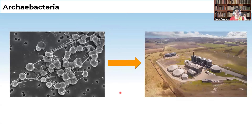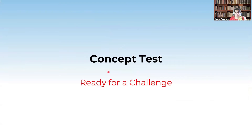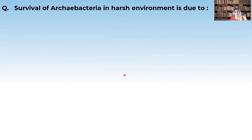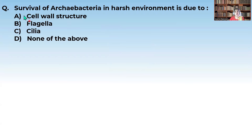Some archaebacteria act as methanogens — biogas is produced from dung because of the action of these methanogens. Now a concept test: Survival of archaebacteria in harsh environments is due to — cell wall structure, flagella, cilia, or none of the above? We discussed that it is because of the different cell wall structure. So survival of archaebacteria in extreme hot and cold conditions is mainly due to their unique cell wall structure.